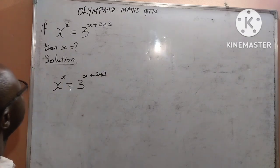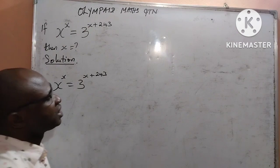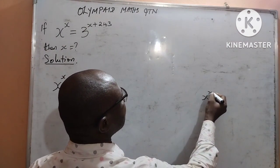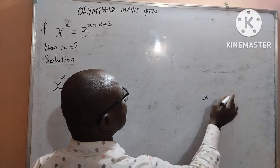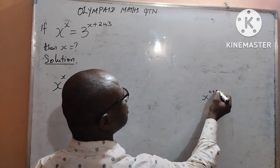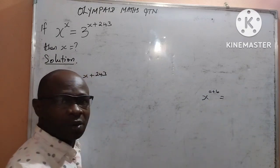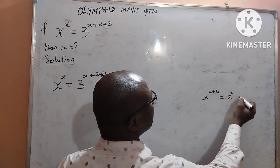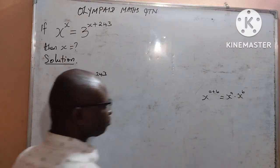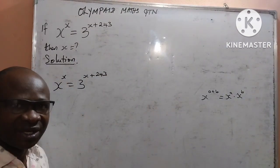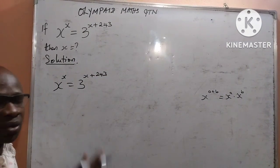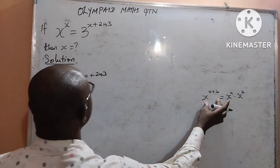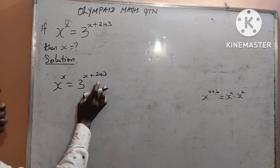I will start with the law of indices that gives us that x raised to power a plus b is equal to x raised to power a multiplied by x raised to power b. This is a very nice law in indices. We apply this as it is on the left hand side of our equation, since that is how it is given to us.